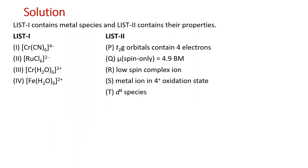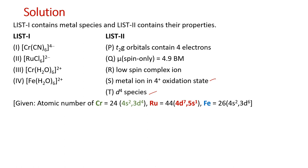Let's look at the question. We will begin with the oxidation state of the metal and what kind of species it is, as that is the simplest thing to identify first in any complex. There are three complexes given — of chromium, iron, and ruthenium. For chromium, the outermost electronic configuration is 4s2 3d4; for ruthenium it is 4d7 5s1; and for iron it is 4s2 3d6.